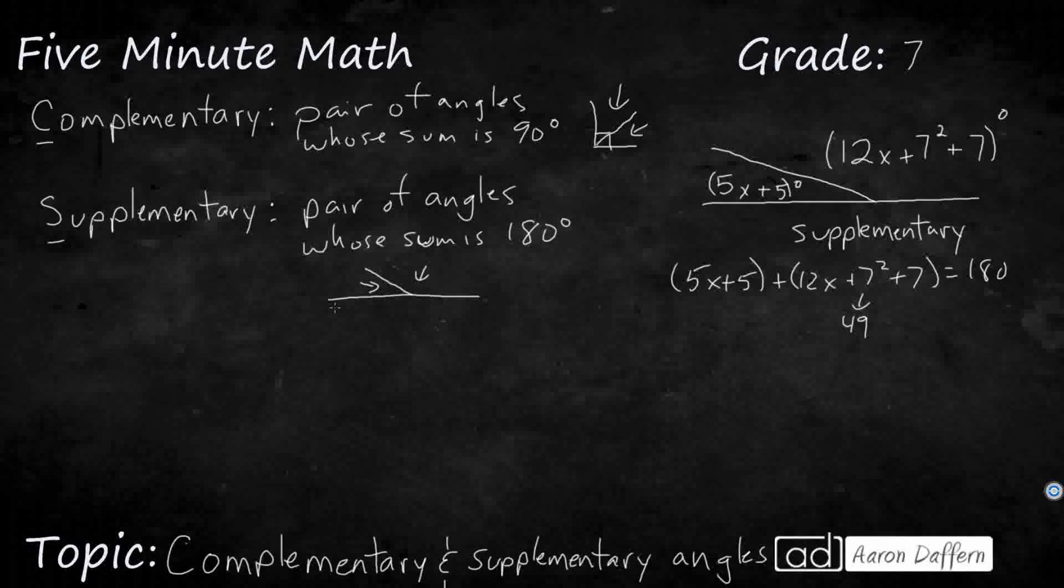So we've got that 49. And then if we take the parentheses off, we've got 12x, we've got 5x, so we've got 7x, and then we've got that 5, we've got the 7. So let's just combine all the rest of these. So now I've got 49 plus 5 is 54 plus 7 is 61. So I've got 7x plus 61 equals 180.